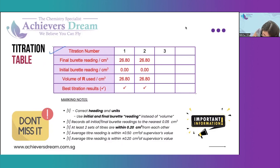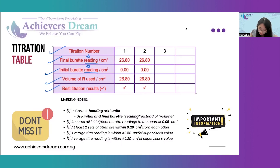One mark will be given for the correct headings and units. Make sure you use 'final burette reading' and 'initial burette reading' instead of 'volume', and remember these five headings.